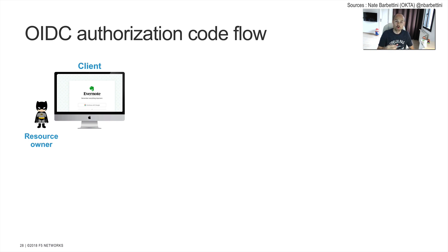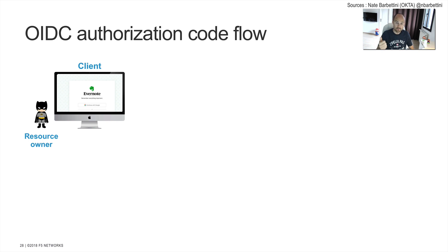There is a client. The client in this example would be a browser connecting to Evernote. On Evernote, there is an icon: 'Please connect with Google' or 'Please connect with Facebook.' This is OAuth. Batman wants to connect with his Google account so that Evernote can retrieve and grant access from Google and get information like profile, profile picture, and contacts, because he wants to share Evernote notes and notebooks with his contacts.